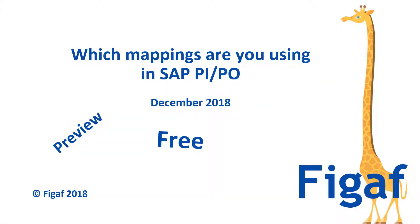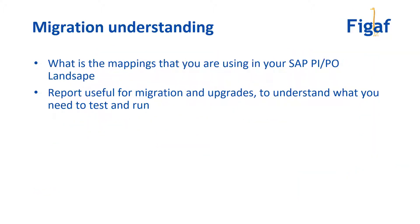Which message mappings are you using in your SAP PI or PO system? I want to preview one of the things we are going to add to the VGAV tool that will allow you to do this for free. The purpose is: if you're doing any migration and want to understand what message mappings you're using and how much they are used, that was previously really difficult to understand, and we have now used the resources at VGAV to really understand all of these different things.